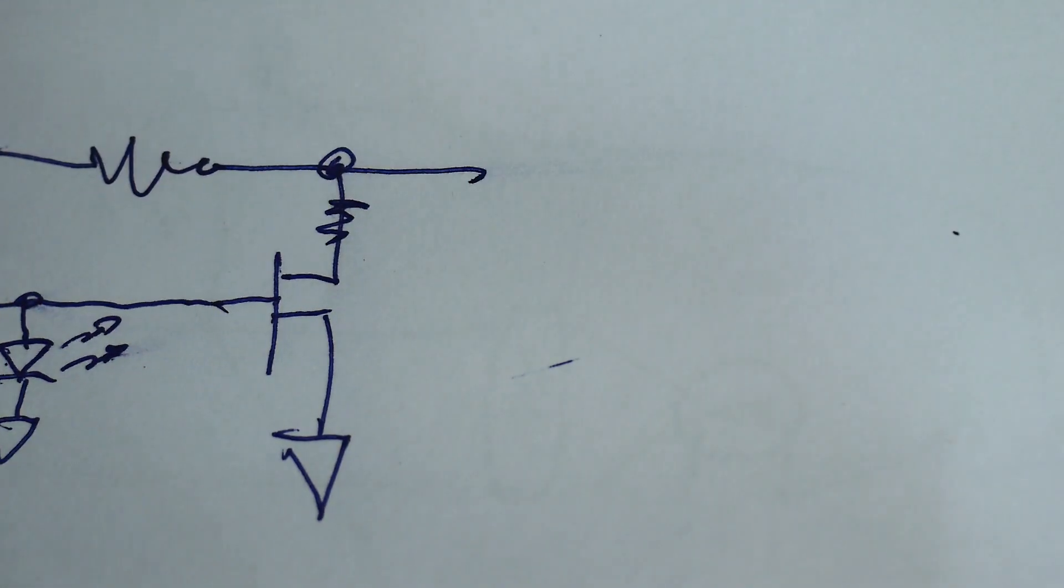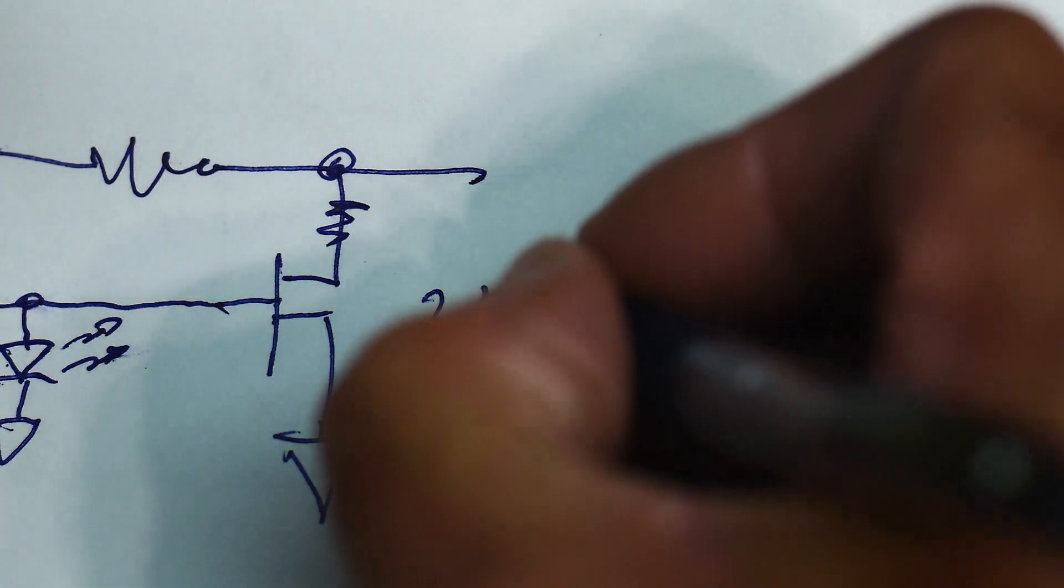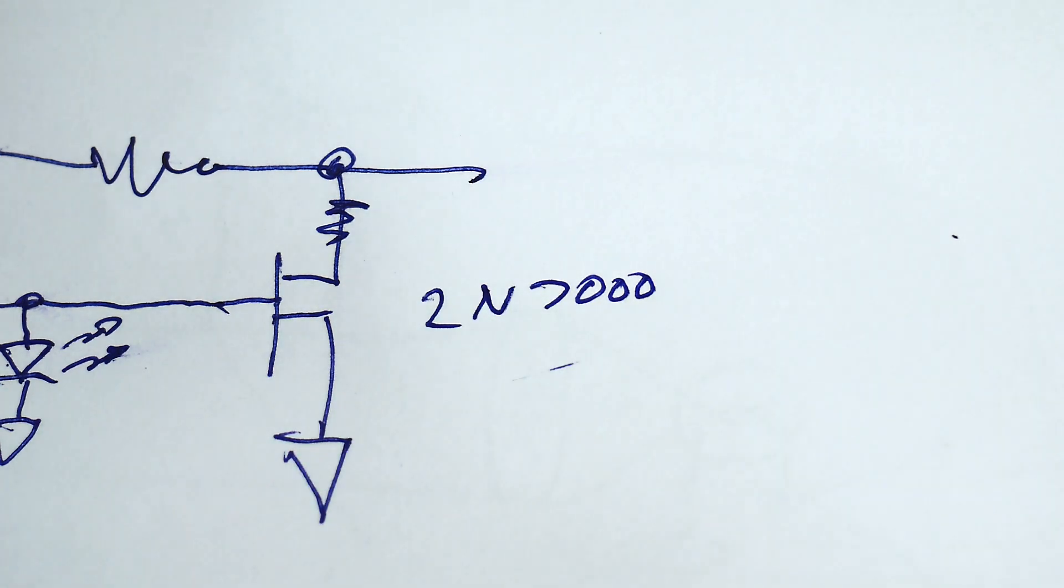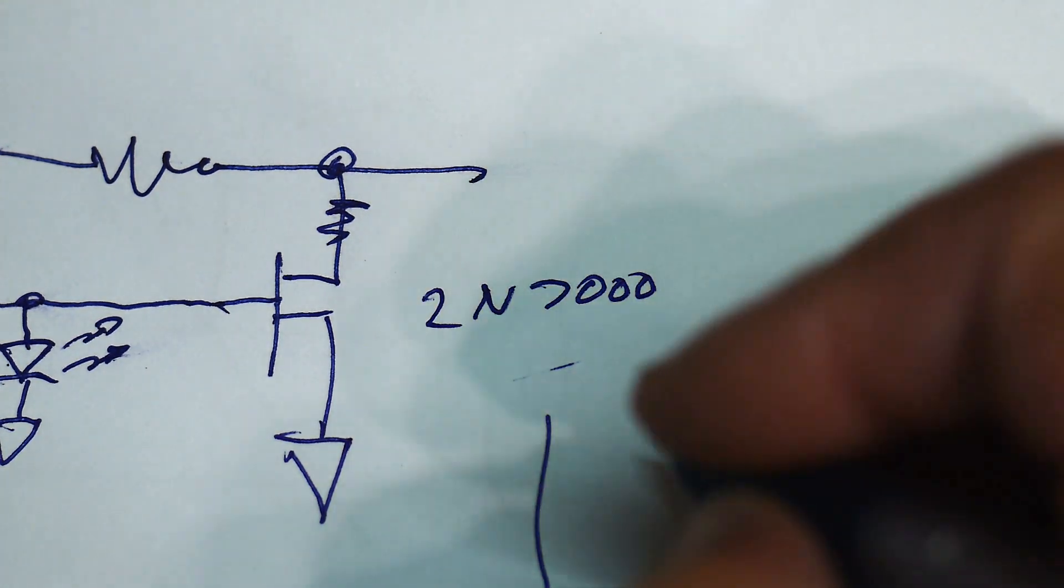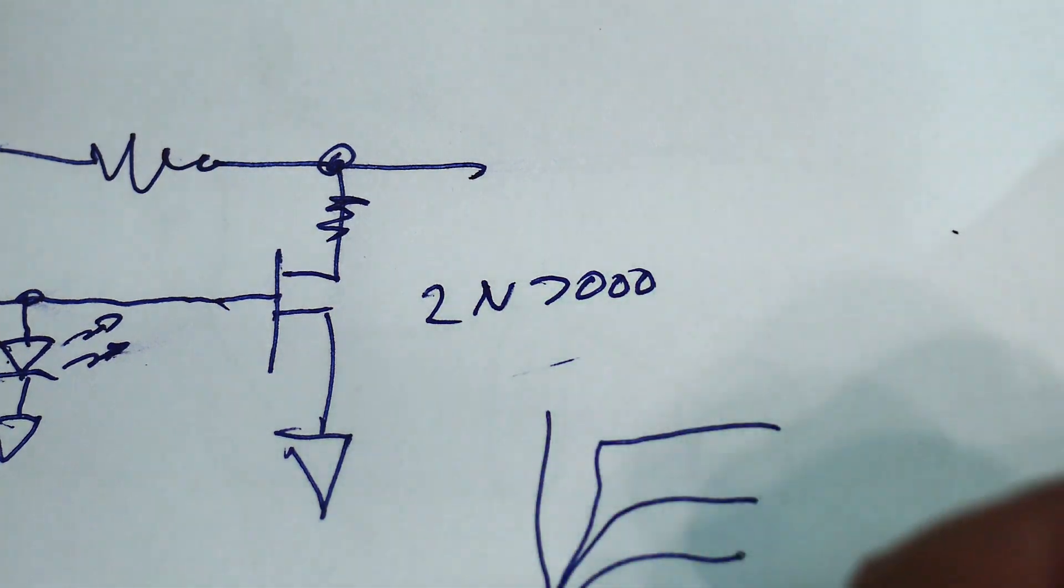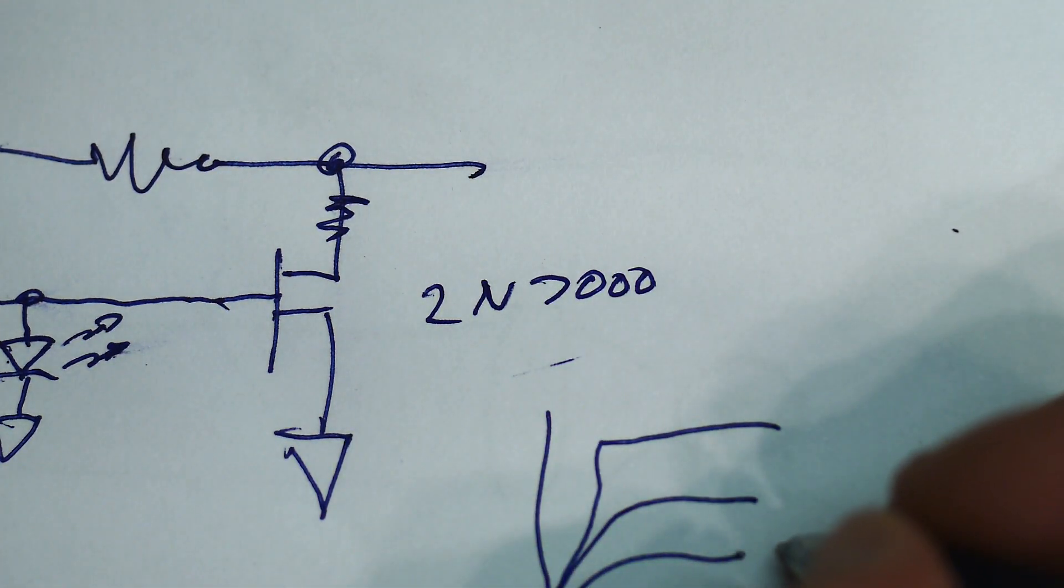Okay, so the problem is this is a 2N7000. And if you look at the data sheet, there's a data sheet of all of the curves for this thing turning on for each gate to source